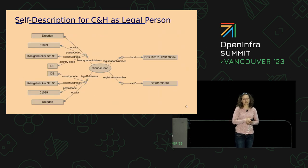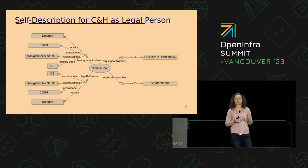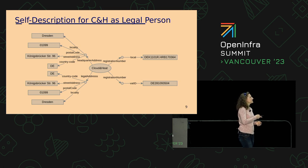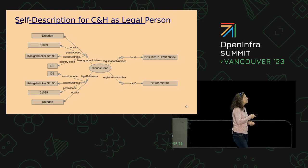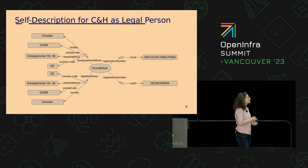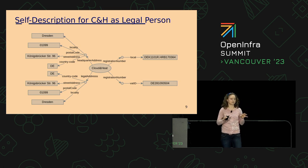Here you can see a self-description for Cloud and Heat as a legal person, visualized as a very simplified RDF graph. The subject in the middle is Cloud and Heat. Cloud and Heat has two registration numbers: a local one and a value-added tax ID. And you see all of the two mandatory attributes — the headquarter address, which is in Dresden, Germany, and the legal address. Here they are the same, but there are organizations where the headquarter and legal address differ.